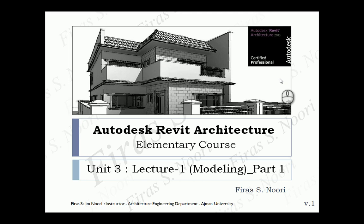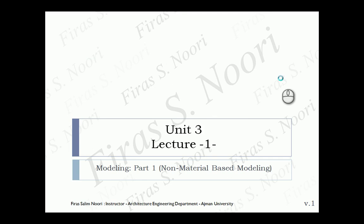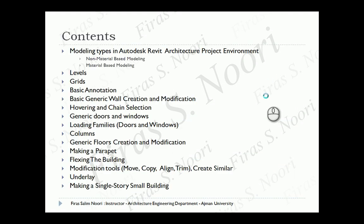In today's lesson we're going to have Unit 3 - the third unit of Autodesk Revit Architecture elementary course. In the first lecture of Unit 3 we're going to study modeling. The entire Unit 3 is about modeling, and in this first lecture specifically we're going to study the main concept of modeling with its two types, focusing mainly on non-material based modeling.